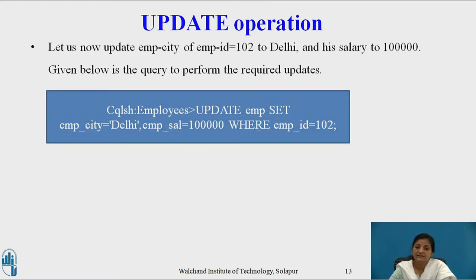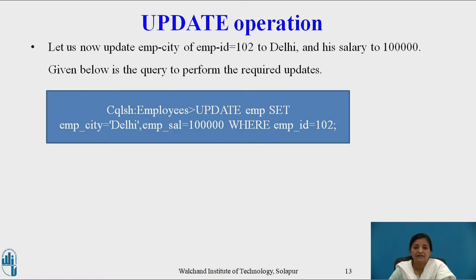Let's consider an example: update the city and salary of the employee whose ID is 102 — changing the city to Delhi (earlier it was Pune) and the salary to 1 lakh. The query is: UPDATE employee SET emp_city = 'Delhi', employee_salary = 100000 WHERE employee_ID = 102. This update is applied only to the employee whose ID is 102.